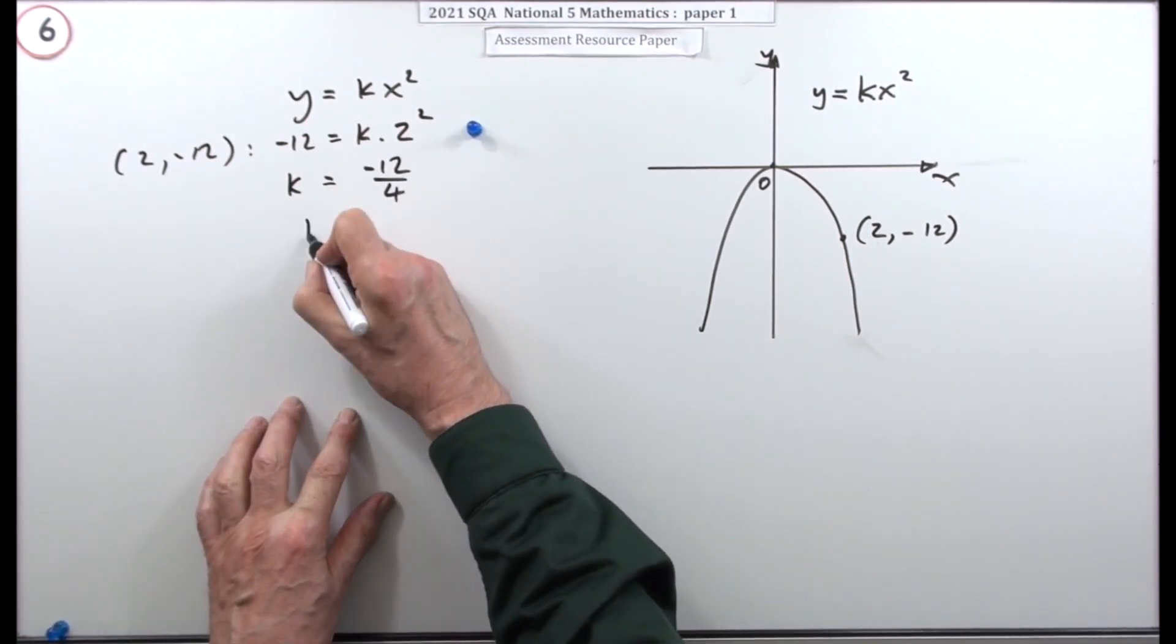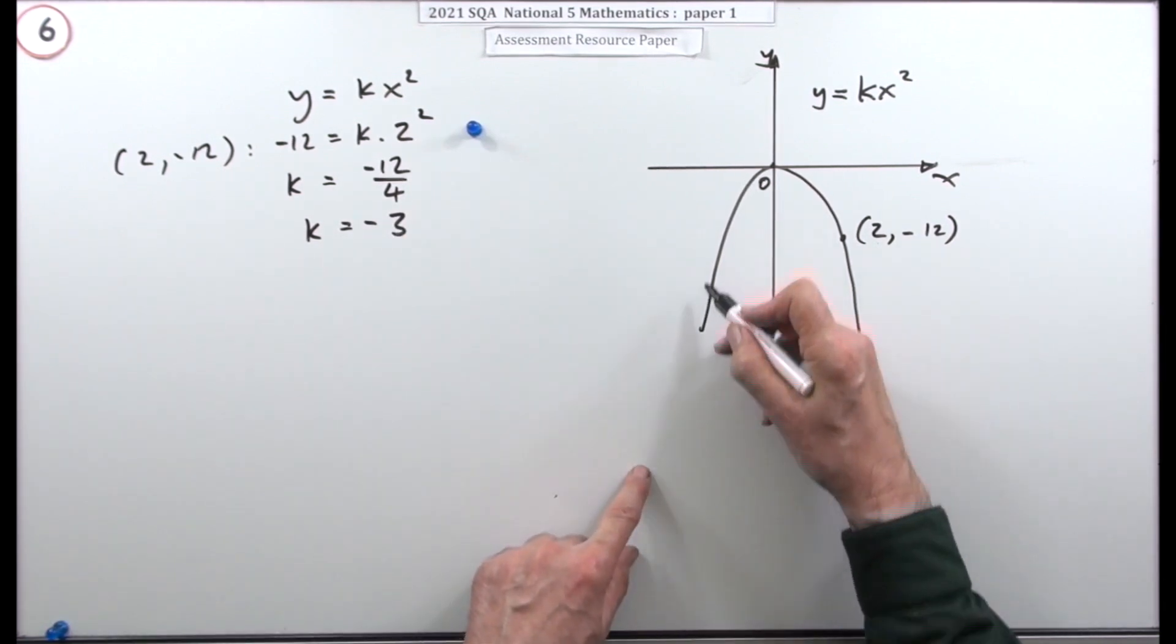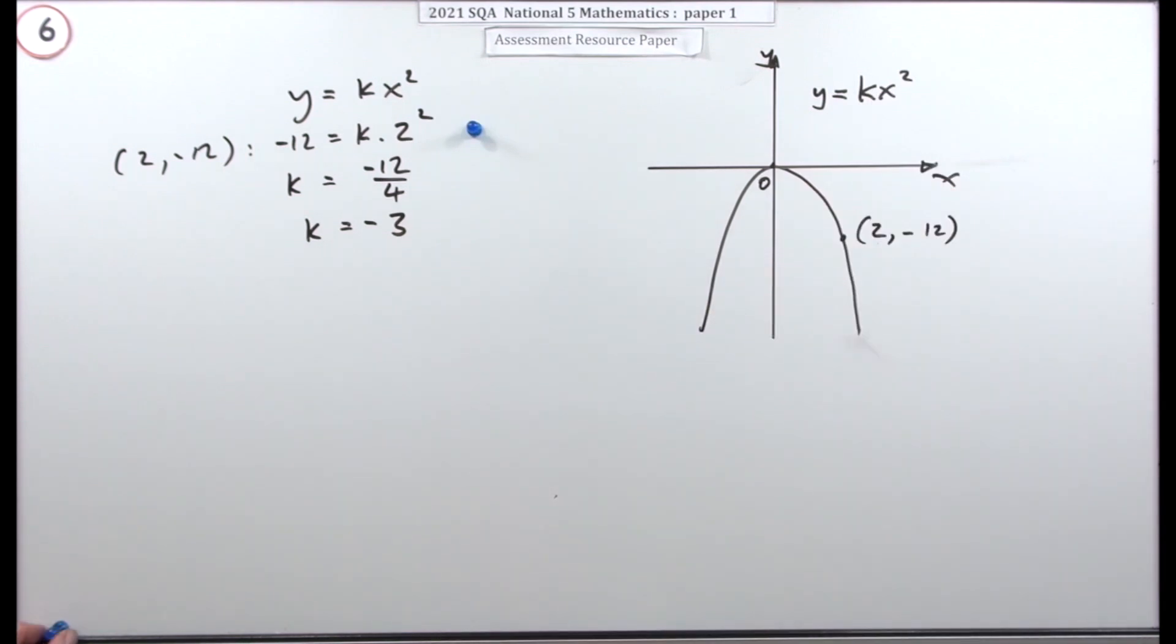As you might have expected, because it's upside down, so k would have to be a negative number for the second mark.